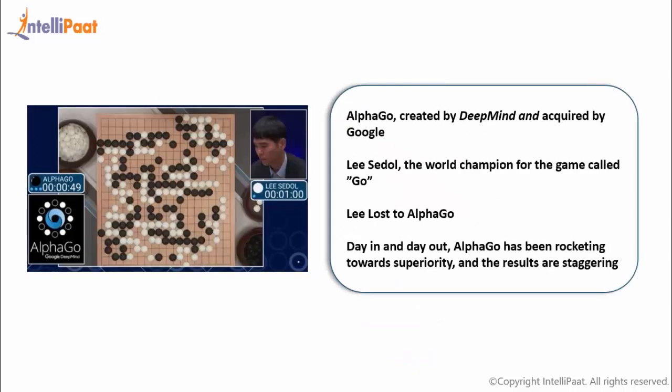Now let's check out an example. This is AlphaGo, a computer program based on deep learning technology created by Google's DeepMind to play the board game called Go. At the right end of the image, you see Lee Sedol, who is the world champion for this game.